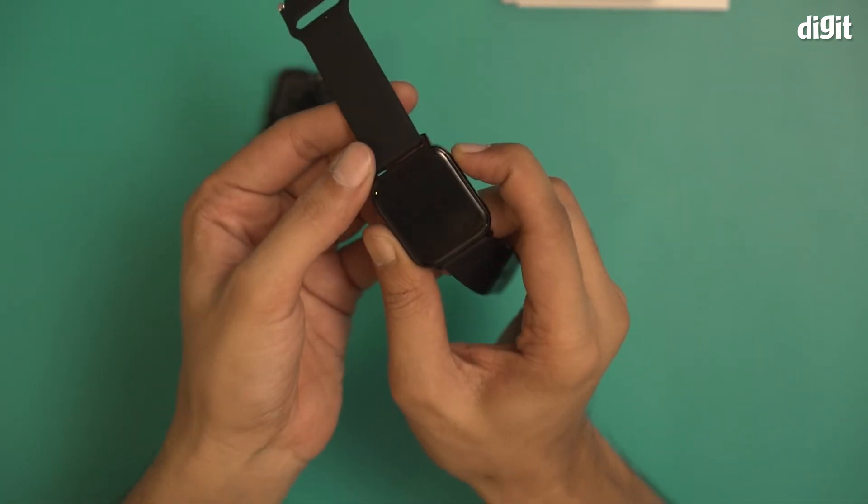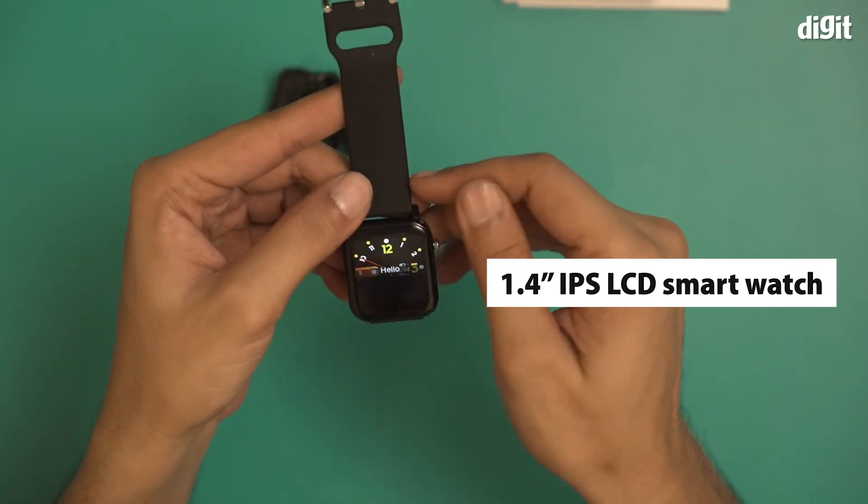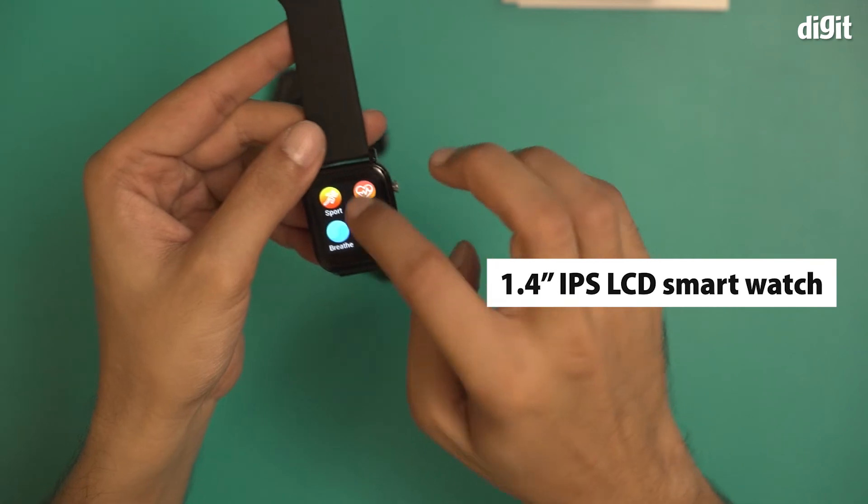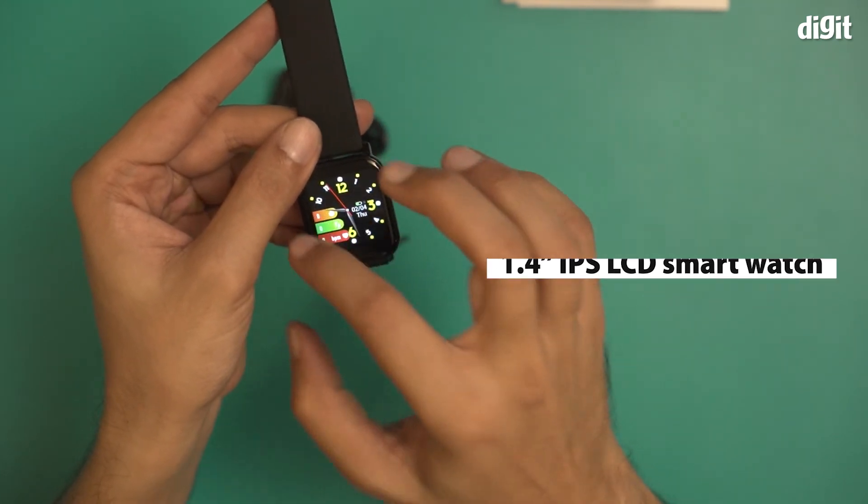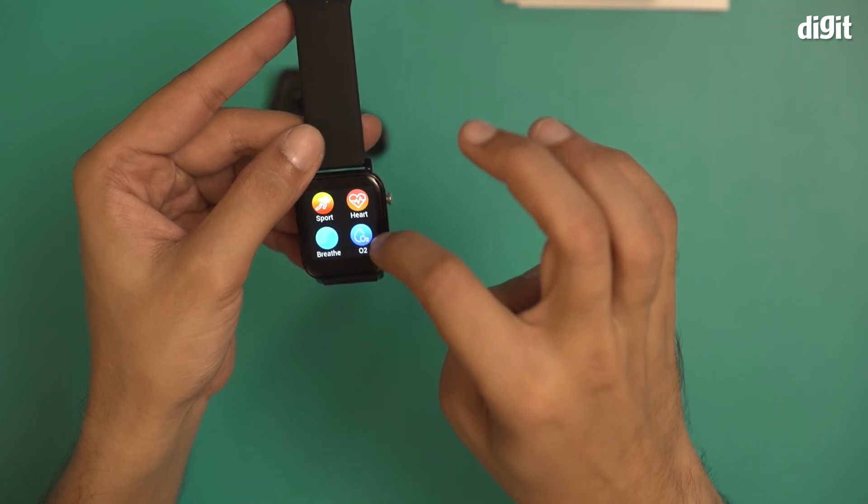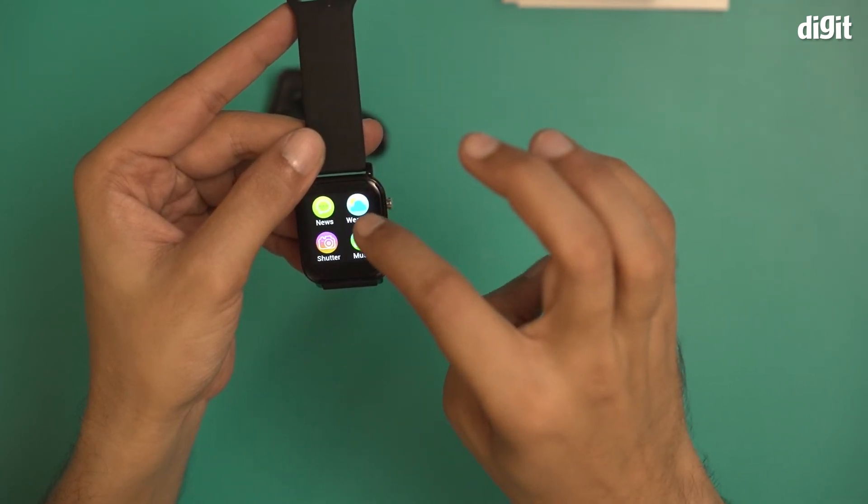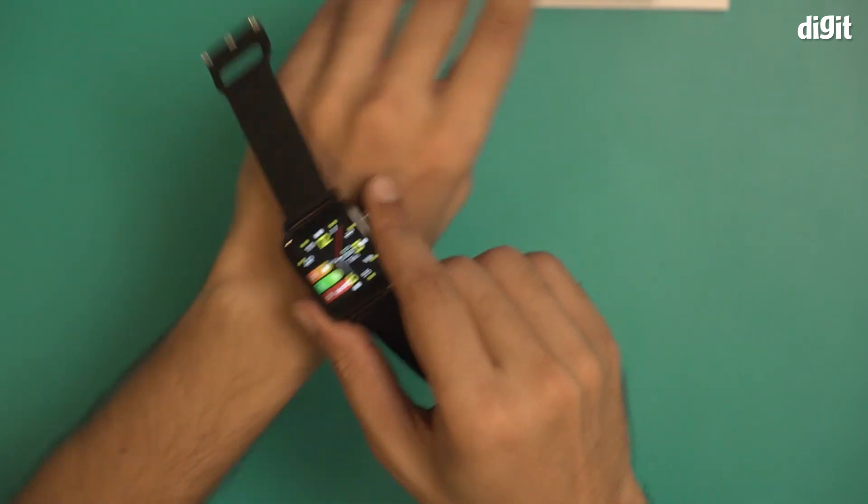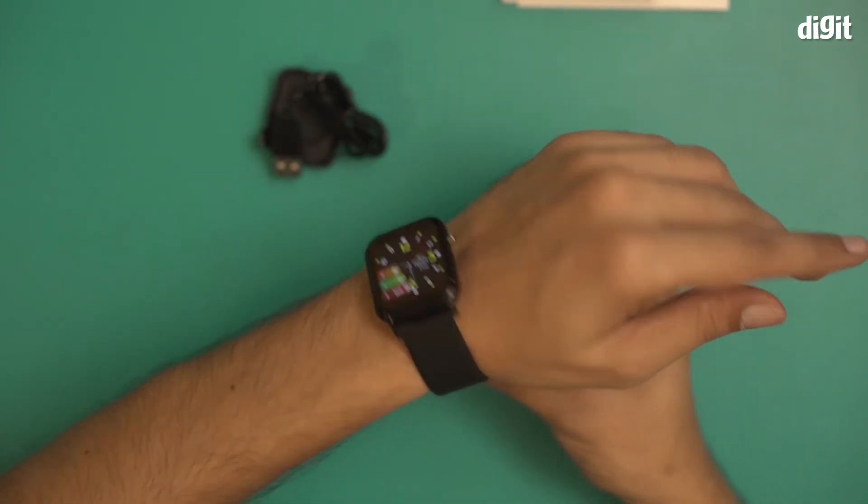Once again, this is what the smartwatch looks like. This is the 1.4 inch IPS LCD display with full touch control of course. And you have watch faces over here along with a lot of other options like the sports mode, the heartbeat monitor, the breathing monitor. You also get shutter and music options as well. I'm going to put it on, this has really thin bezel as well and comes with a zinc alloy body.